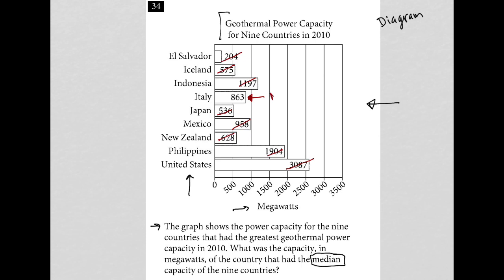The middle value equals the median. When you have a list of data points, it is the middle-most value that is the median. So our answer here is 863.